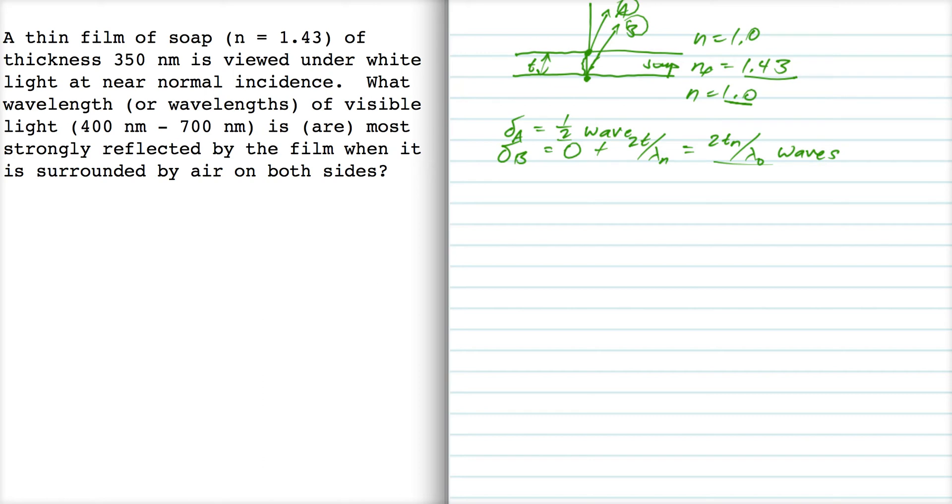Now, we're asked for light that is strongly reflected. Okay, strongly reflected, that means that we're dealing with constructive interference and so we're going to set our phase difference,